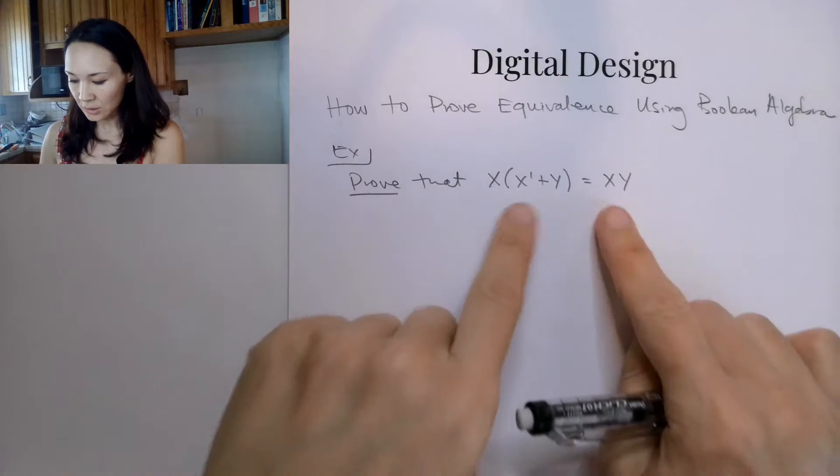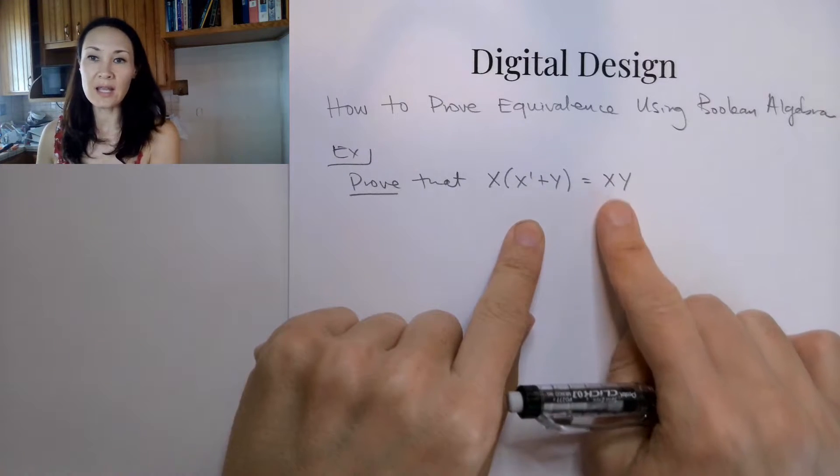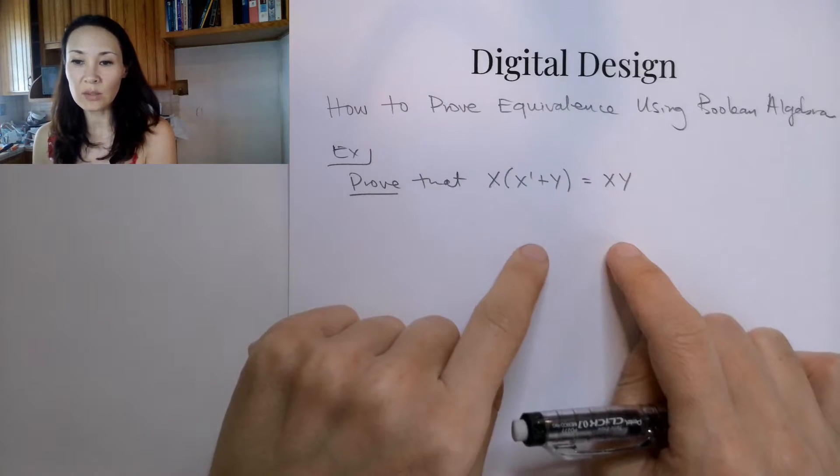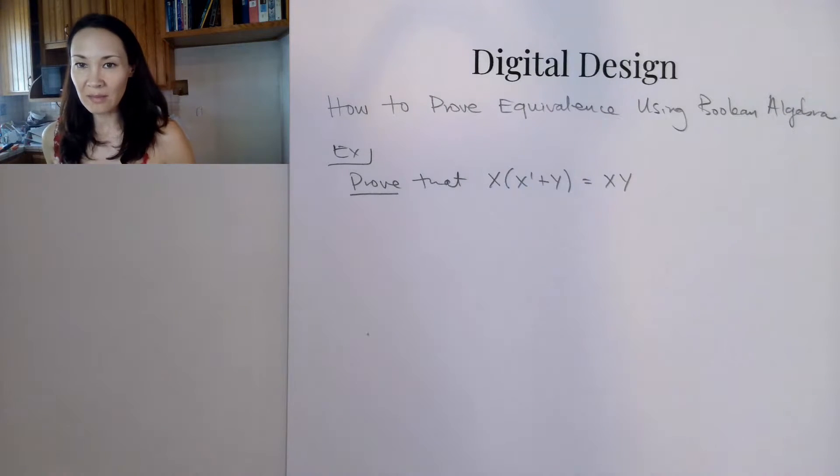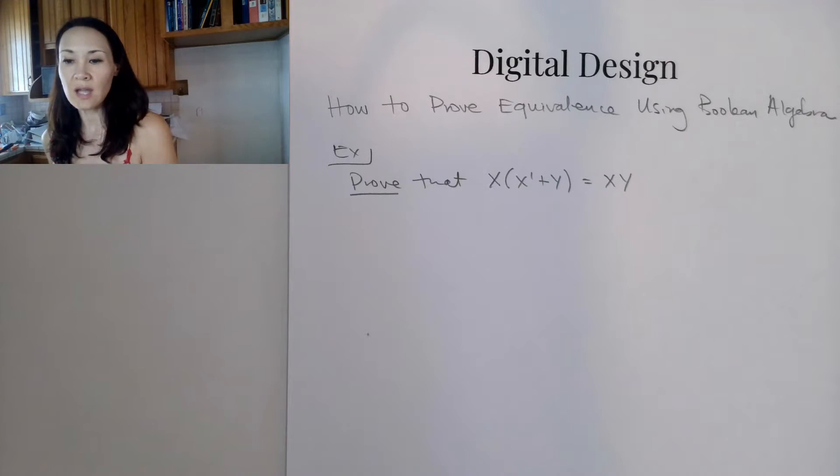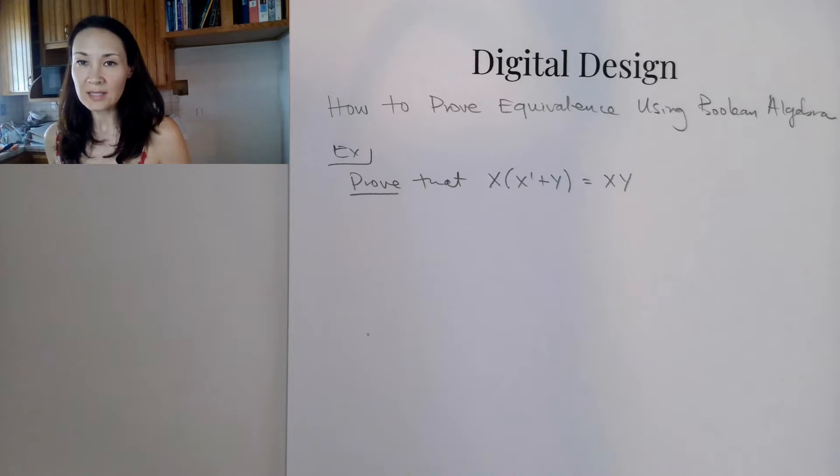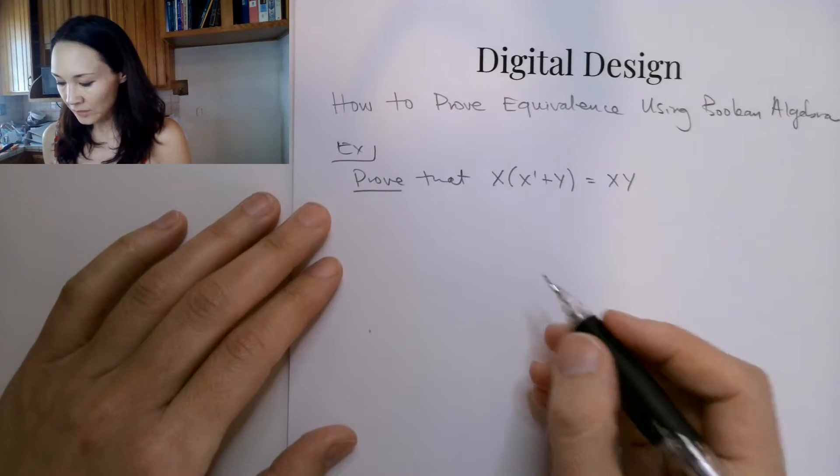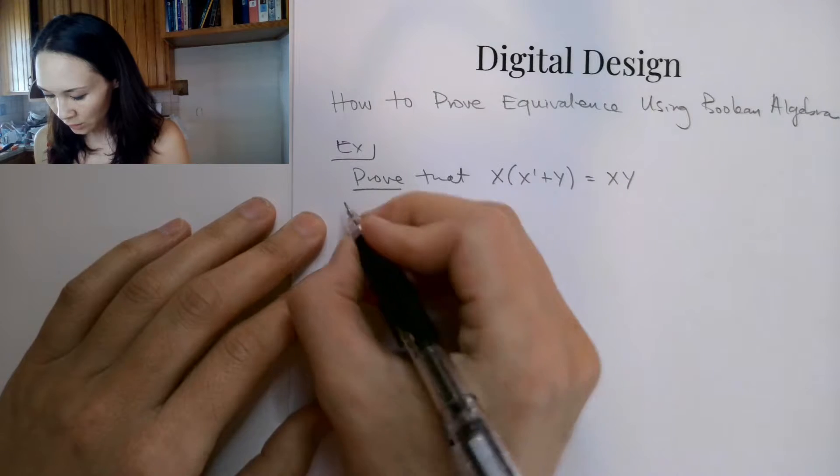You might be tempted to fiddle with the left hand side and the right hand side until you get them to equal each other. Don't do that. The mathematicians are going to get angry if we do that. Instead, what we want to do is start on one side of the equation, apply some theorems and postulates of Boolean algebra to make it look like the other side, and then we can state that we have equivalence.